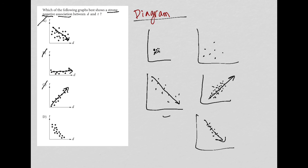And then we see choice D is what's left over as both being strong or tightly connected dots and having a negative slope or a downward trend. So that's why the answer here is choice D.